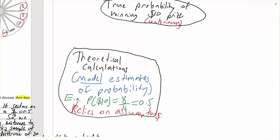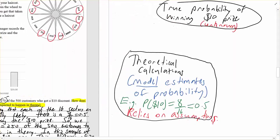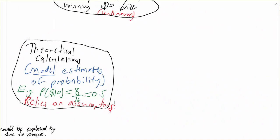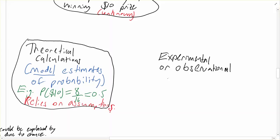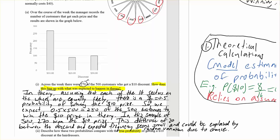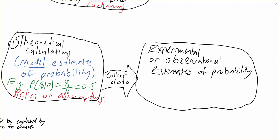The next thing we do to test that is we actually record some data — either collect it or run an experiment. In this case they collected data on the 500 customers that week. That's called an experimental or observed estimate of the probability. So we start with the theoretical calculations, then we collect data, and that gives us our experimental or observational estimates — like the 270 out of 500 results in $10 from the sample of 500 customers, done from an experiment or a random sample.